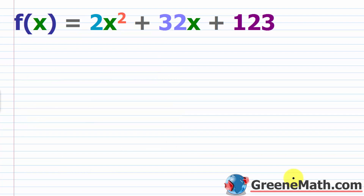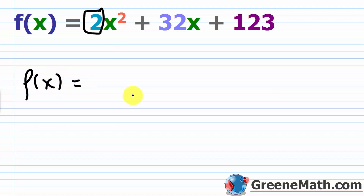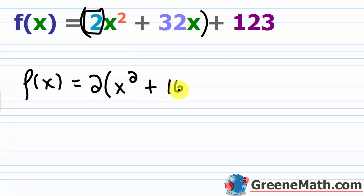Let's look at another example that's a little more challenging because the coefficient on x squared is not one. We have f(x) = 2x² + 32x + 123. The first thing to do is make sure the leading coefficient on x² is one — but instead of dividing everything by two, we factor the 2 out from the first two terms. So f(x) = 2(x² + 16x) + 123.